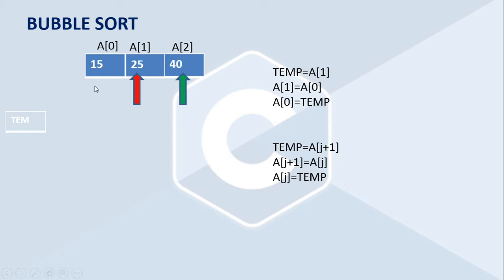This is the basic principle of the bubble sorting algorithm. The actual swapping operation works like this: A[1] value is placed into a temporary variable, then A[1] is loaded with A[0]'s value, then A[0] is placed with the temporary value. These are the steps needed for swapping two elements.